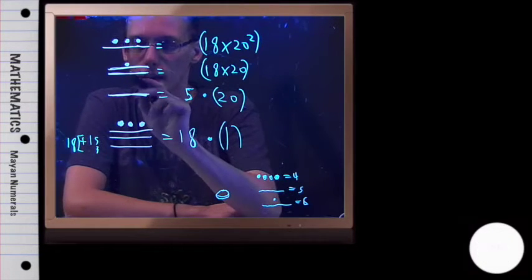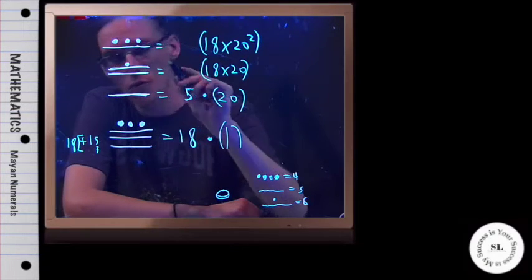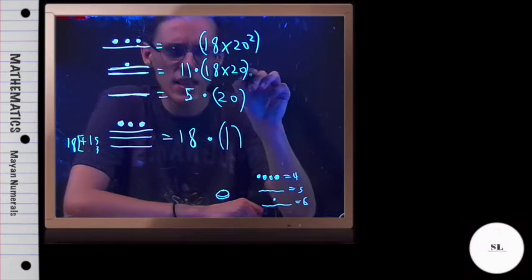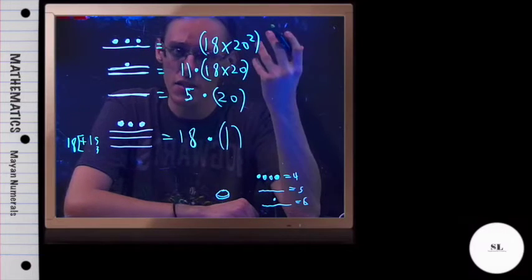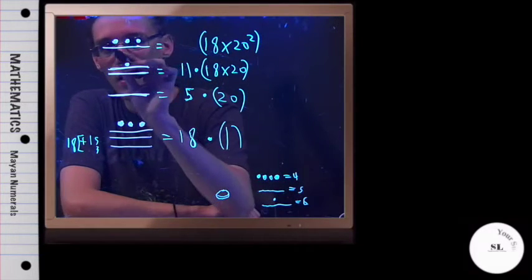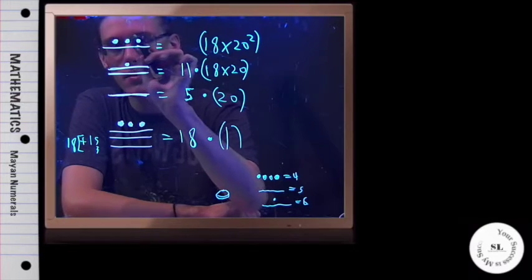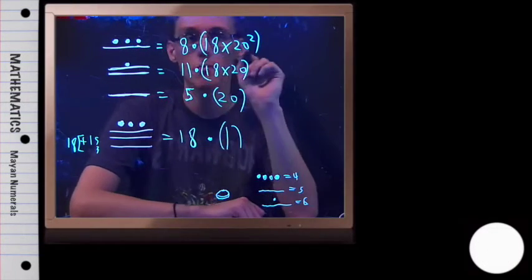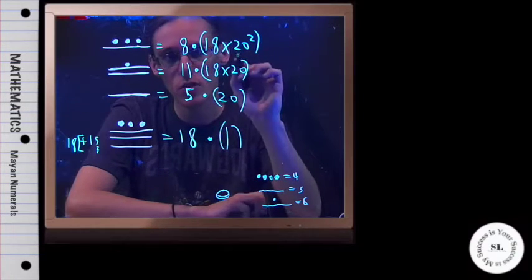And then right here, I've got five plus five for 10, plus one for 11, in the 18 by 20, or in the 360's place. And then I've got five, a slash, six, seven, eight, times 18 by 20 squared, in this position right here.